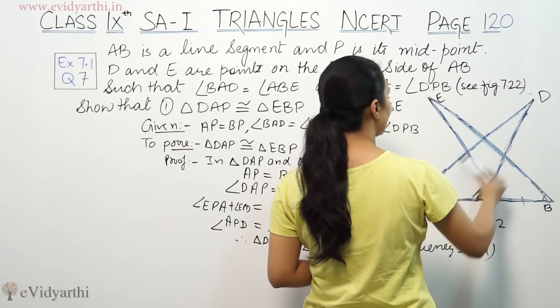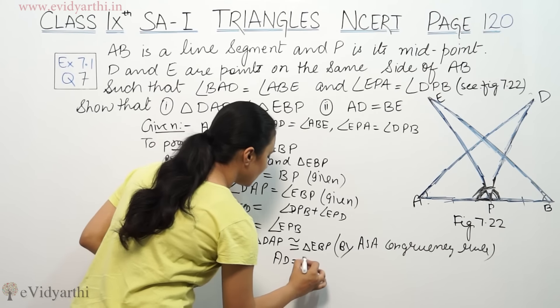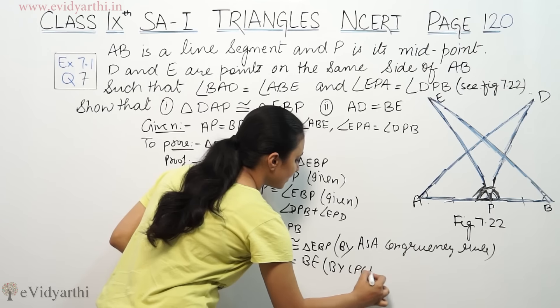And we can say that when triangles are congruent, AD is equal to BE by CPCT.